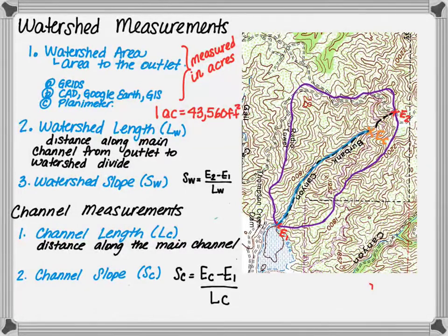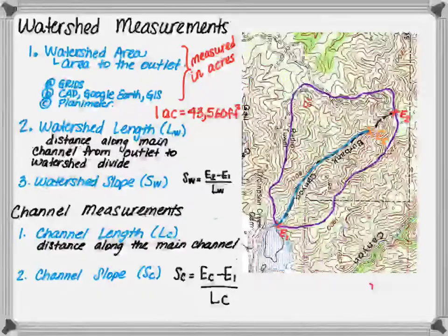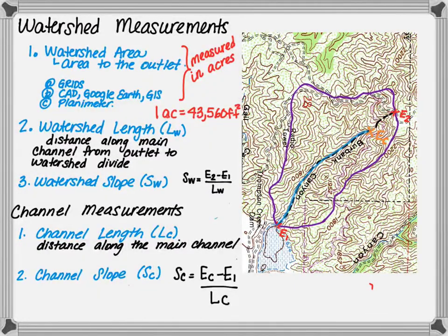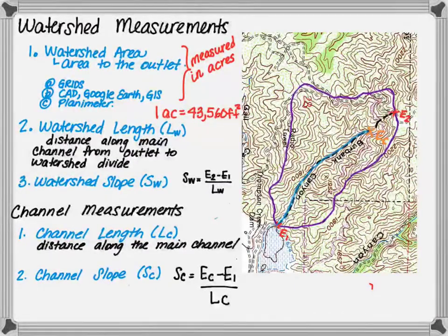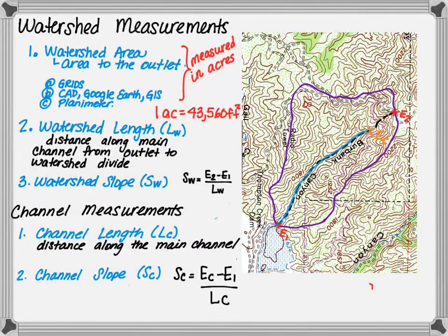Now take a minute and pause the video. It's important that you pull out your delineation of Burbank Canyon that you did in part one and identify your E2, your EC, your E1. Look up the elevation values. Is it a thousand feet, a hundred feet? We will use these numbers in class when we meet.